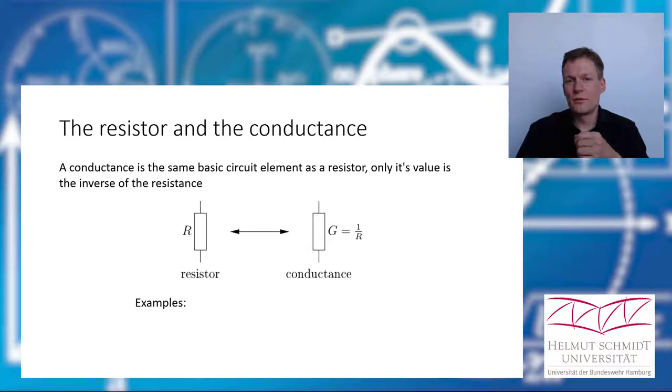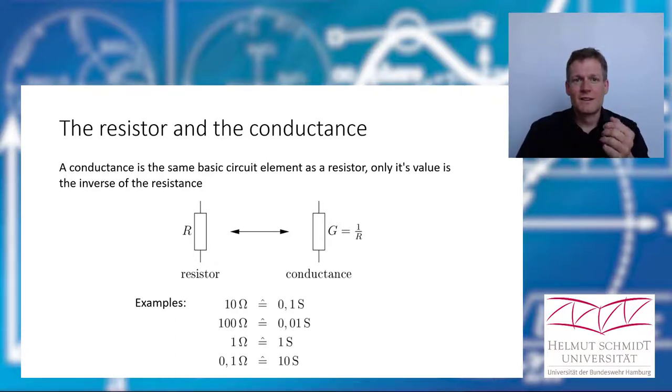A few number examples: if you have a 10 Ohm resistor, you could also call it 0.1 Siemens, or 100 Ohm would be 0.01 Siemens. 1 Ohm is 1 Siemens and 0.1 Ohm is 10 Siemens.